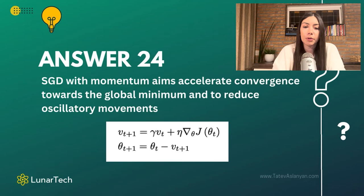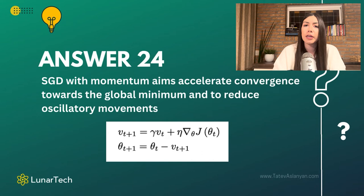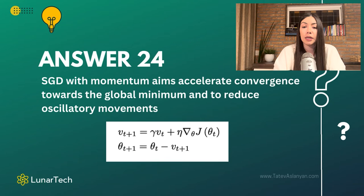SGD with momentum tries to accelerate the convergence process. Instead of having too many movements in different directions with too-varied gradients and updates, it stabilizes the process and produces more consistent updates. As part of the momentum, we compute the momentum term VT+1 for the update at time step T+1, which equals gamma multiplied by VT, plus the learning rate eta, and then the gradient.